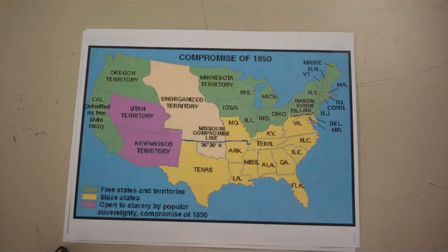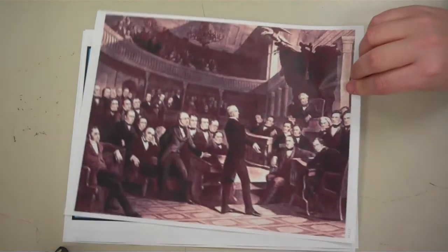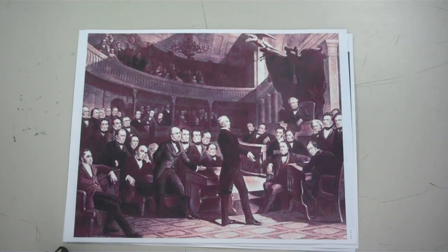The only problem was that Congress would become unbalanced and power would shift to the free states, as California wanted to enter the Union as a free state. After much debate in Congress, Henry Clay, known as the Great Compromiser, who had helped create the Missouri Compromise in 1820 — which established the 36-30 line — developed a new compromise to help settle the problem of California's statehood.